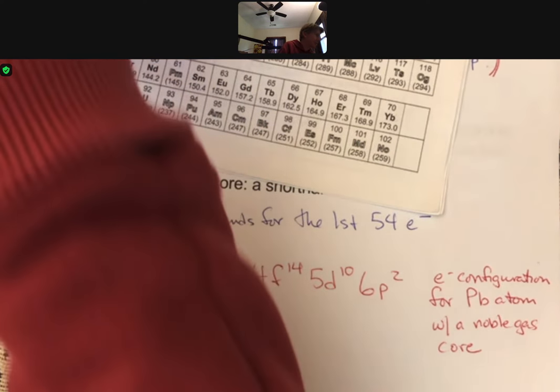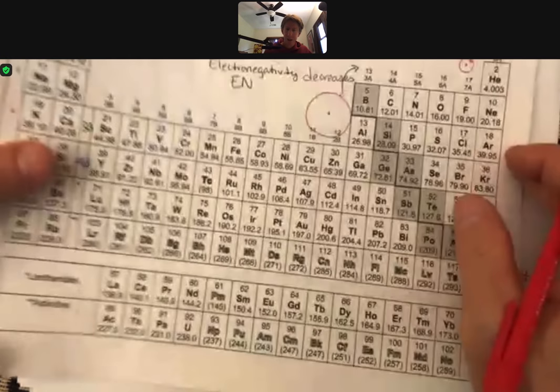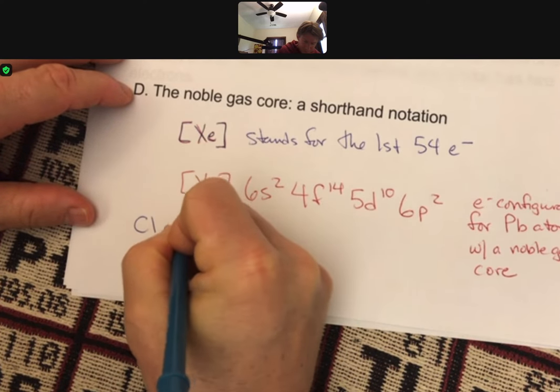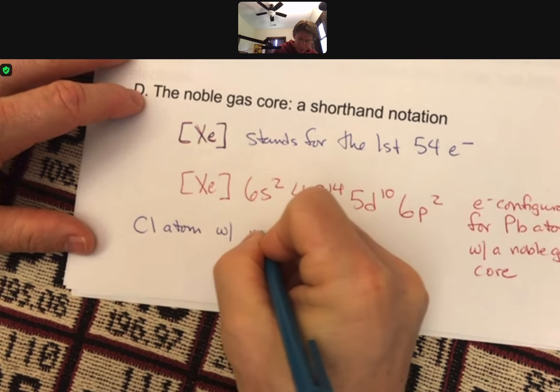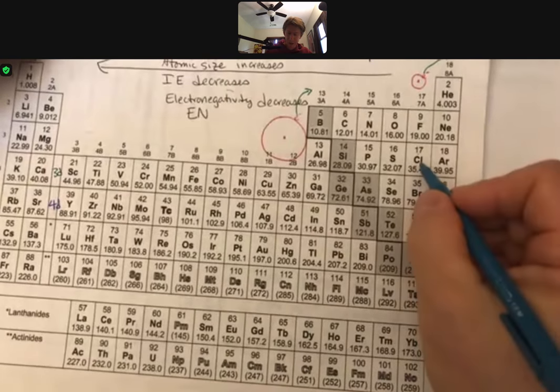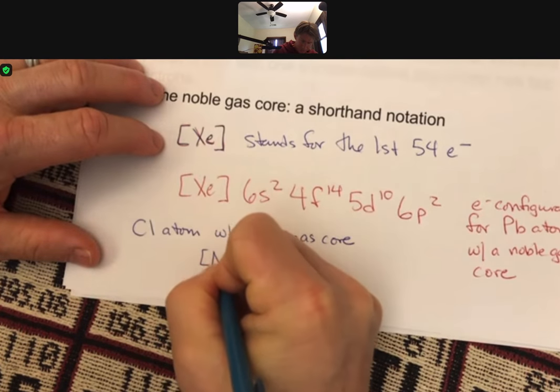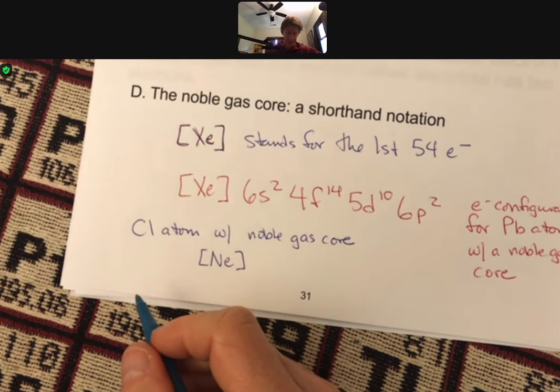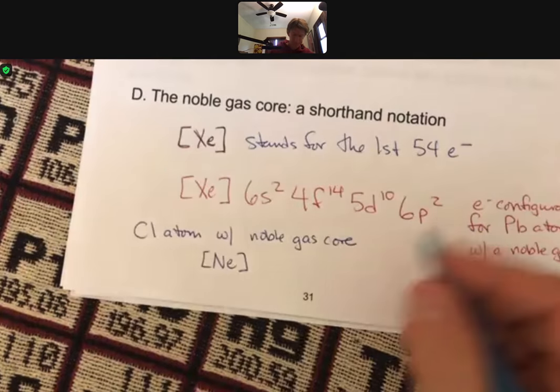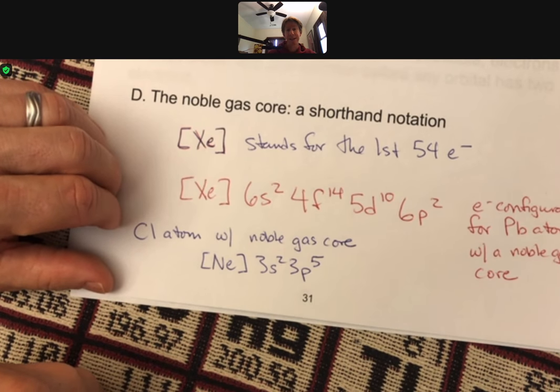Now, if we go back and we did, let's say, chlorine before. Chlorine atom with a noble gas core. We would look at our periodic table. We would find chlorine. We would go backwards until we got to neon. And we put neon's chemical symbol in square brackets. Then we would go 3s2, 3p5. Just like that. So that's a second example of a noble gas core.